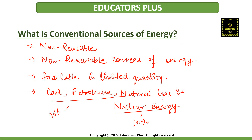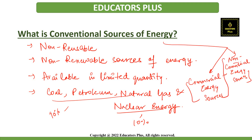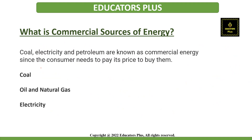Conventional sources of energy are further classified into two types: commercial energy sources and non-commercial energy sources. Commercial energy sources include coal, electricity, and petroleum. These are known as commercial energy sources since the consumer needs to pay a price to buy them.